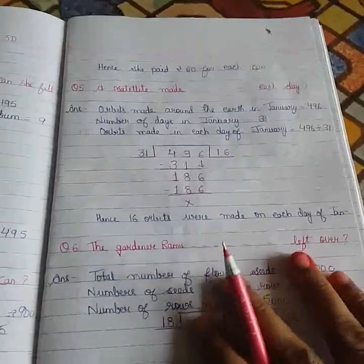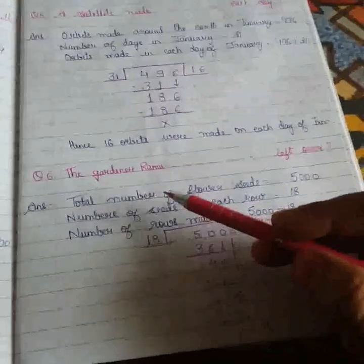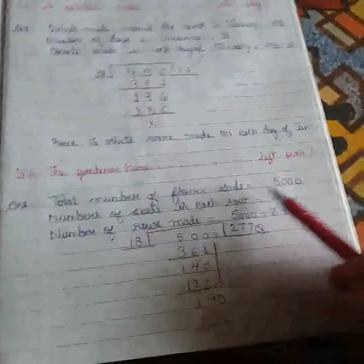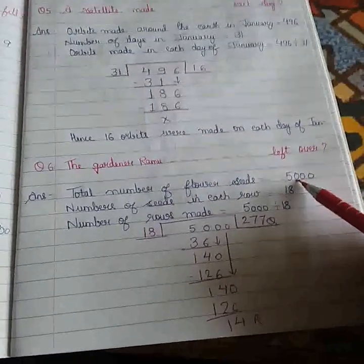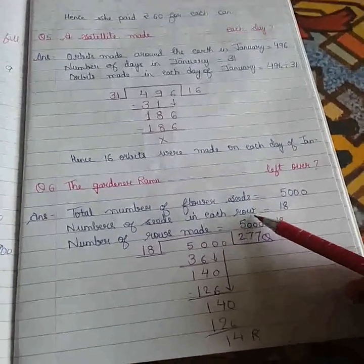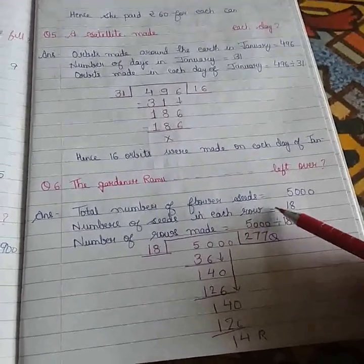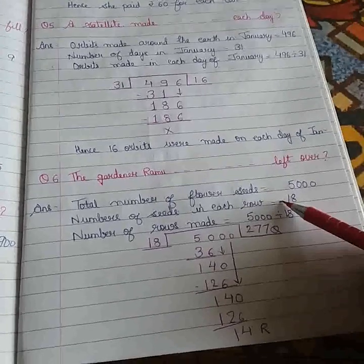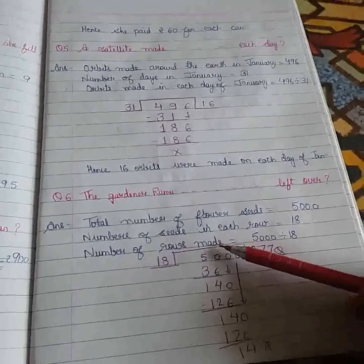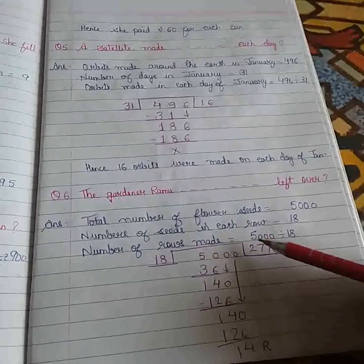Now this is the 6th question. Here in question number 6, Ramu is a gardener and he is having 5000 seeds with him. He has to put 18 seeds in each row in the garden. Now the question is asking how many complete rows are made. We have to find out the number of rows. Again we are asking for numbers, so again divide it.